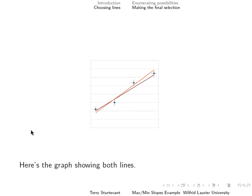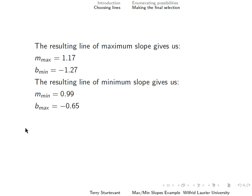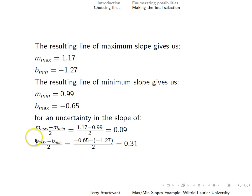Here's the graph showing both lines. The line of maximum slope gives us a particular slope and y-intercept, and the line of minimum slope gives us another. The uncertainty in the slope is the difference between the maximum and minimum divided by 2, which is 0.09. The uncertainty in the y-intercept is the maximum minus the minimum divided by 2, which is 0.31.